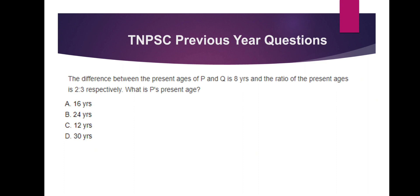The difference between the ages of P and Q is 8. So P − Q or Q − P equals 8. The ratio of their ages is 2 to 3. What is P's age? Explaining the equation: first, P − Q = 8. P by Q is 2 to 3. First option is 16 years: P = 16, Q = 24. Then P − Q = 8 — first condition satisfied. And 16 to 24 is 2 to 3 — second condition satisfied. This is the answer.